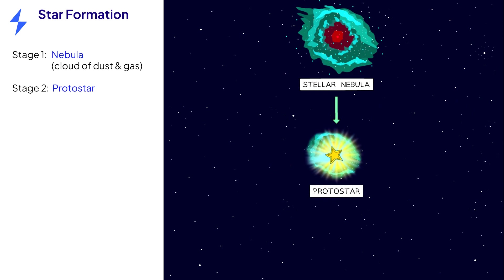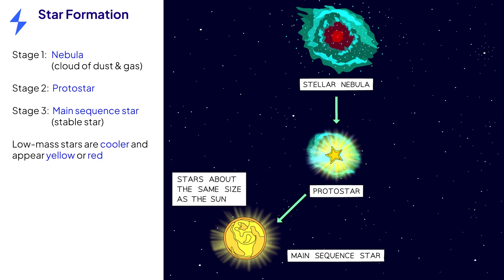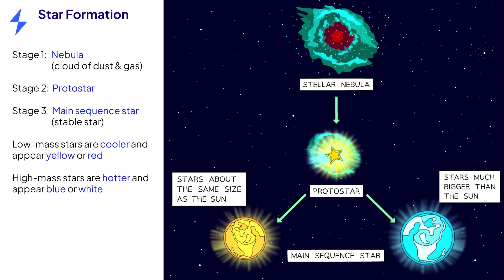After the protostar stage, the star becomes a main sequence, or stable, star. This is where the life cycles of stars of different masses start to diverge. Low mass stars, like our sun, are cooler in temperature and emit yellow or red light, whereas high mass stars are much hotter and emit blue or white light.